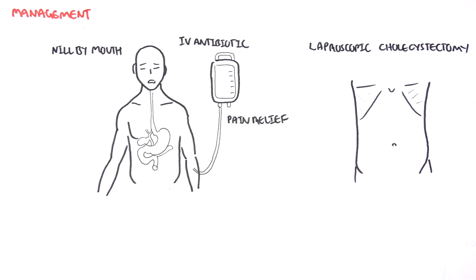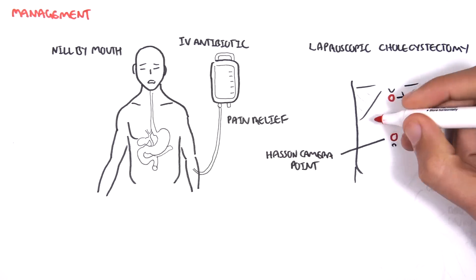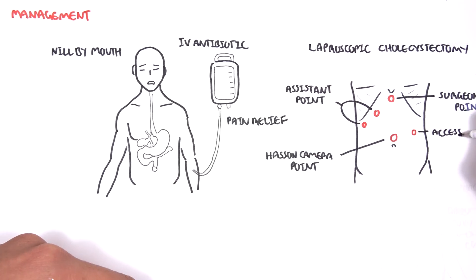In laparoscopic cholecystectomy, there are a few ports or holes in the abdomen that can be made. These include the surgeon point under the xiphisternum, the Hassan camera point, assistant point and the accessory point.